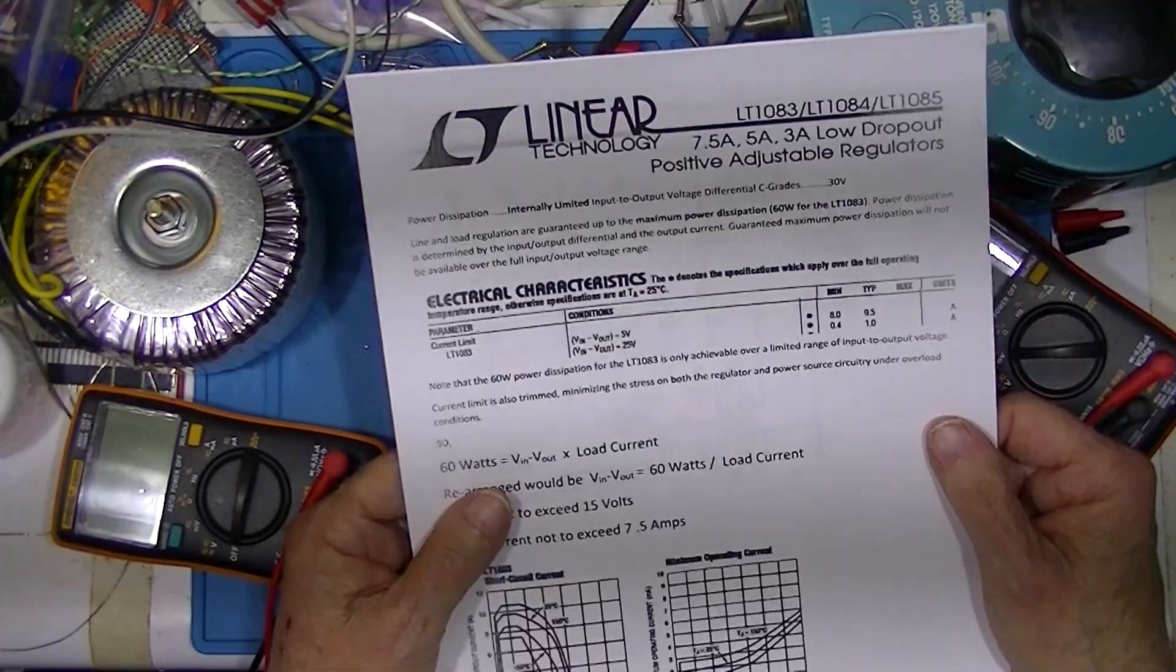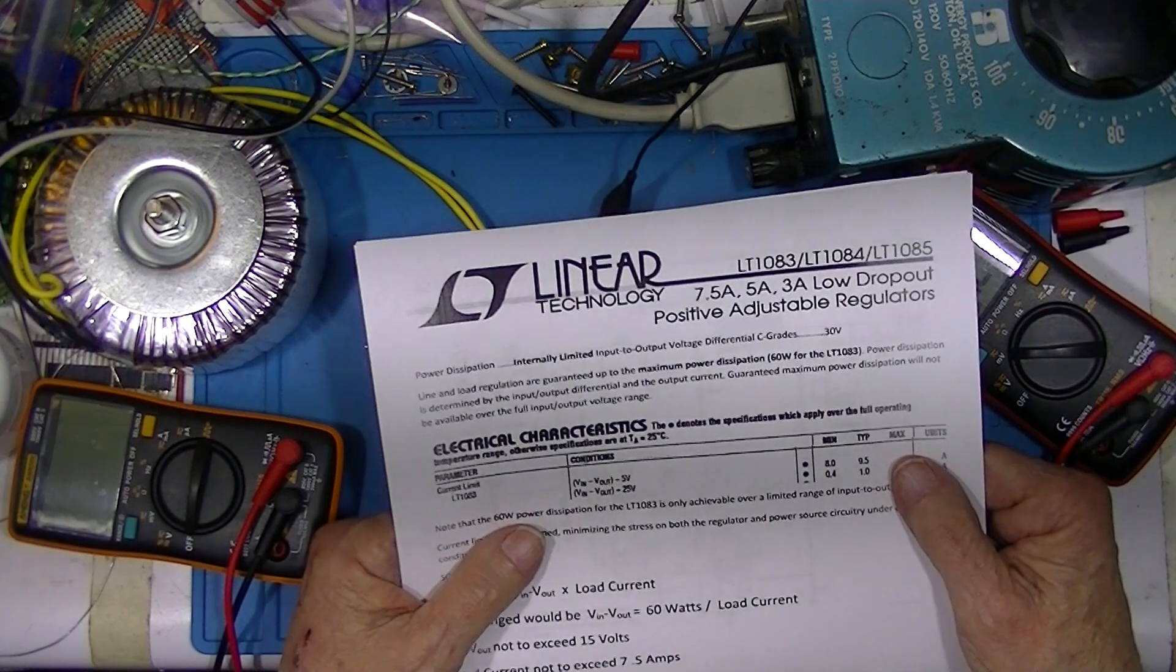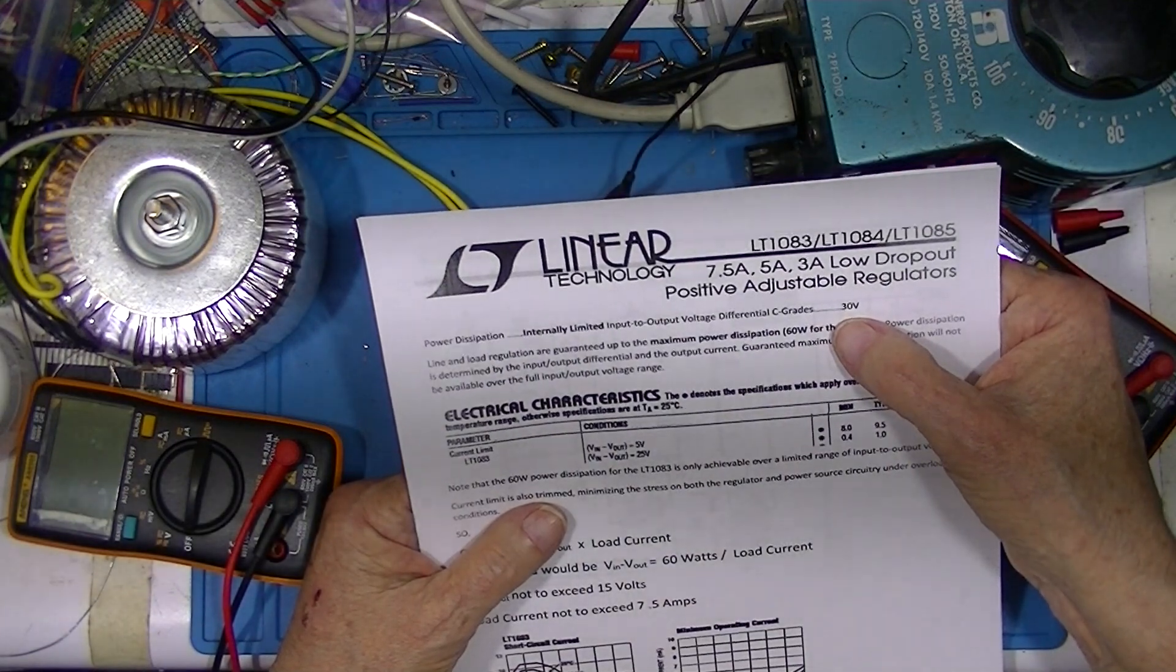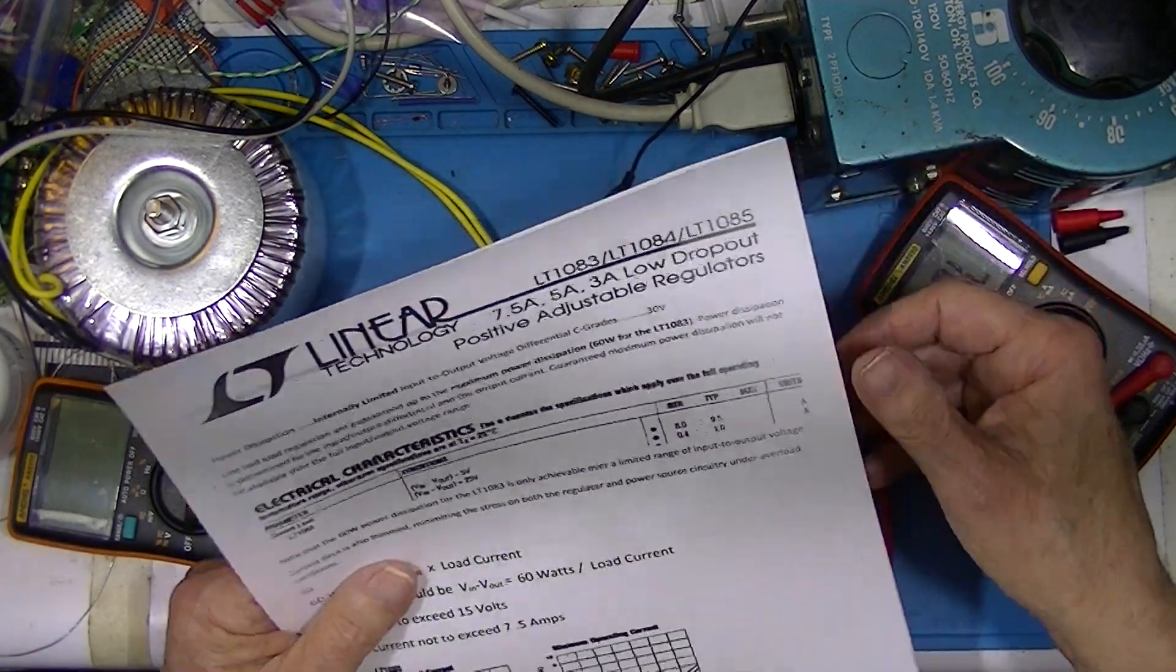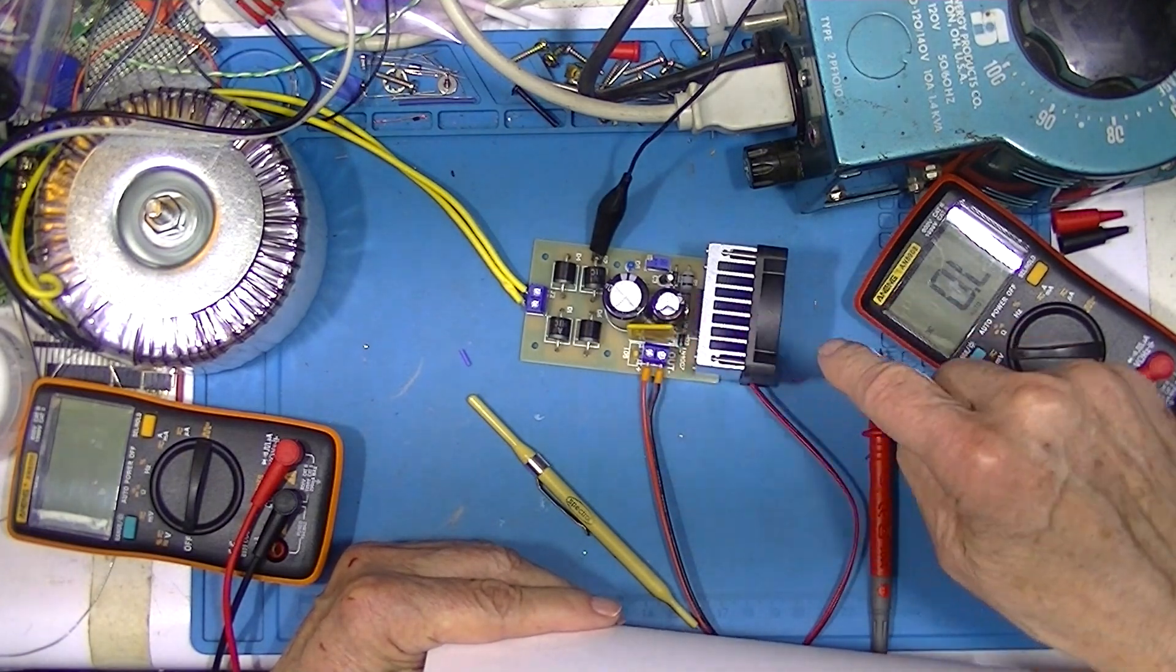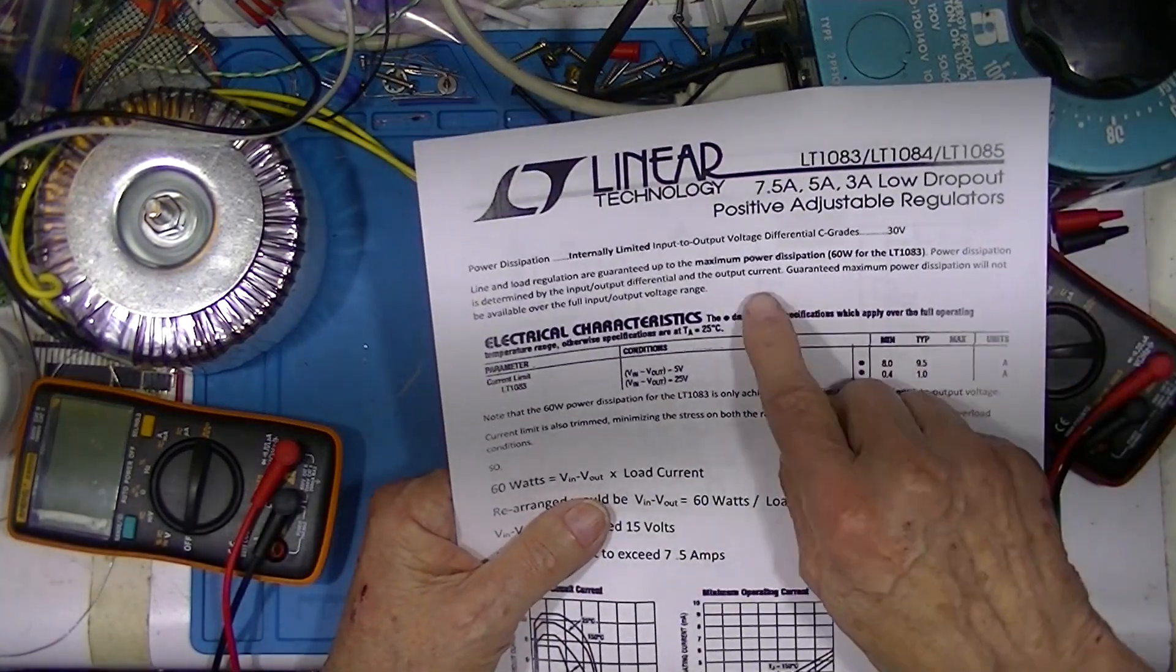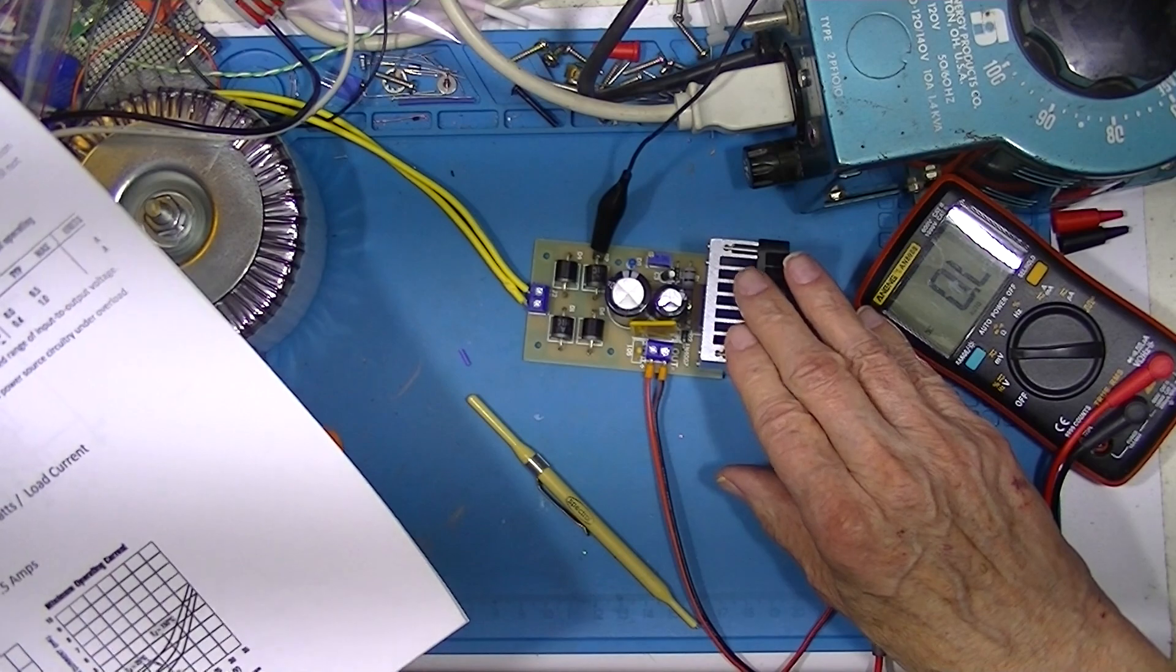This LT1083 is a rather interesting device. It's got a bunch of internal limits. One condition is no more than 30 volts across the input-output, and no more than 60 watts of dissipation in the device itself. Now it's also internally thermally limited and internally current limited. Now that puts some constraints in the design of the power supply. The only really good thing is the 60 watt maximum power dissipation—it makes the thermal system easy to design. It can never dissipate more than 60 watts.